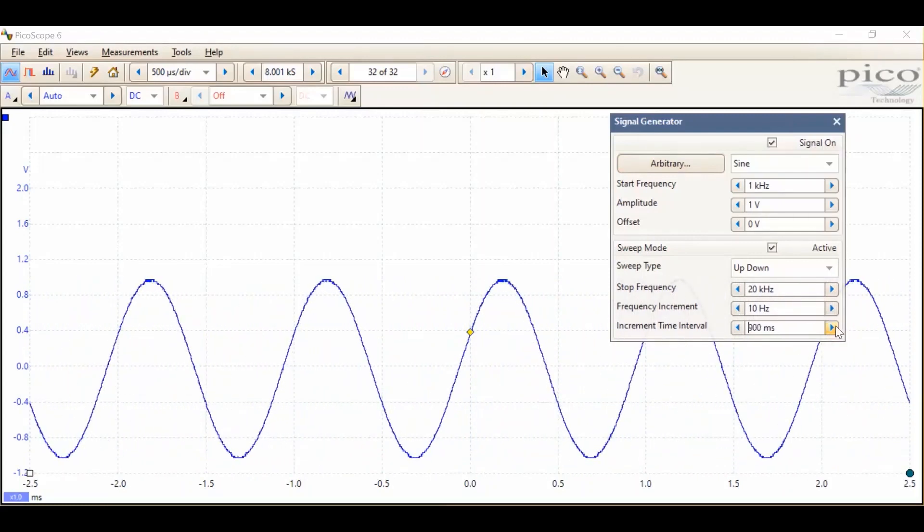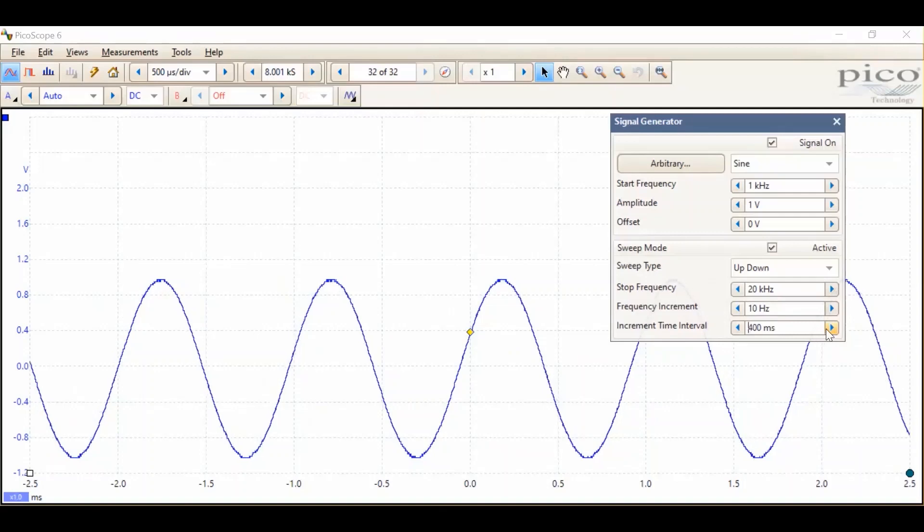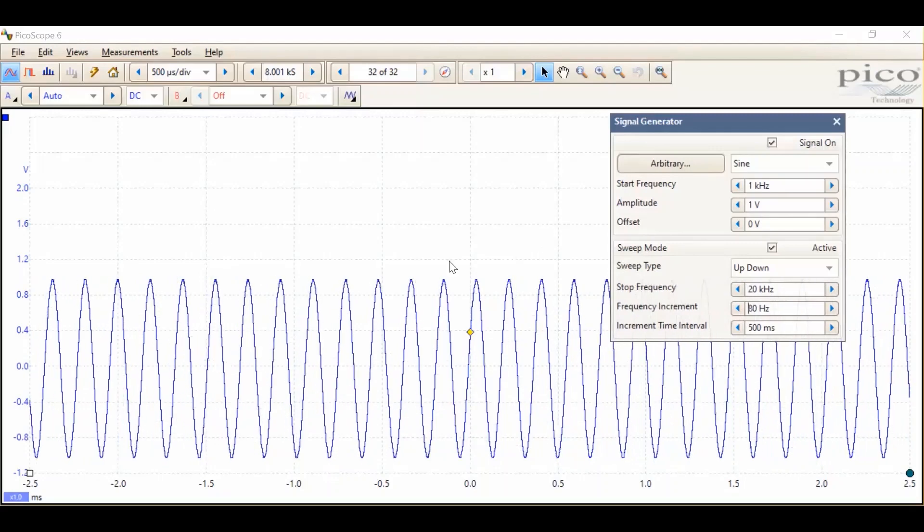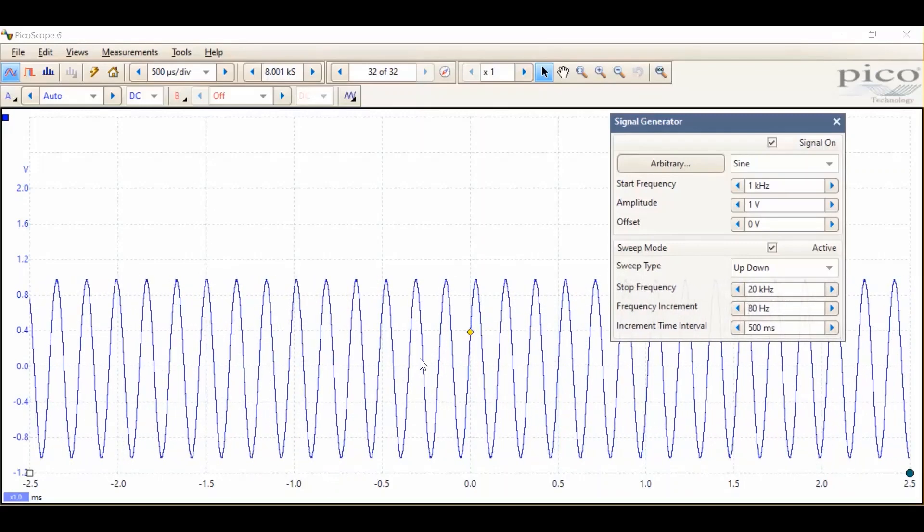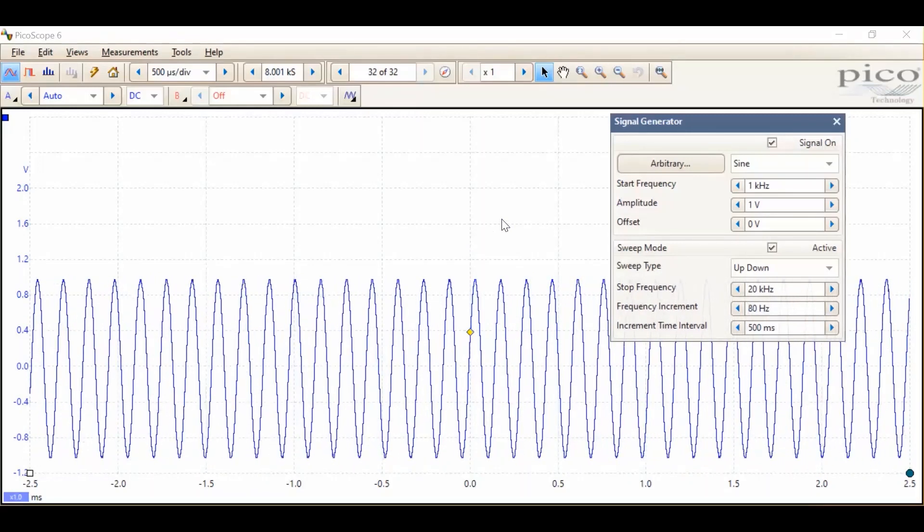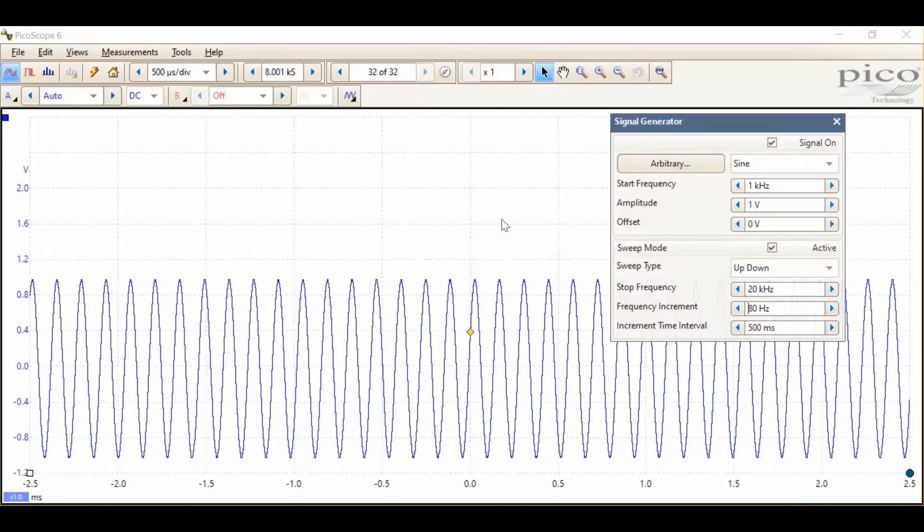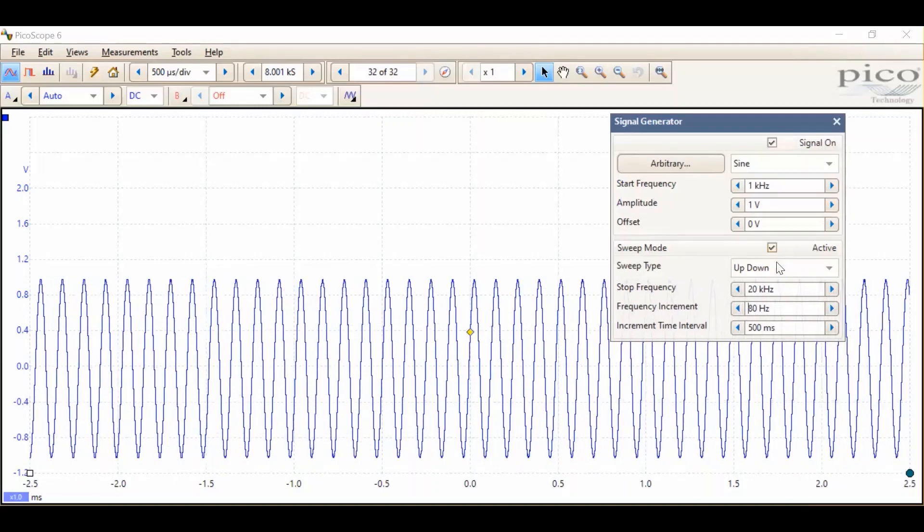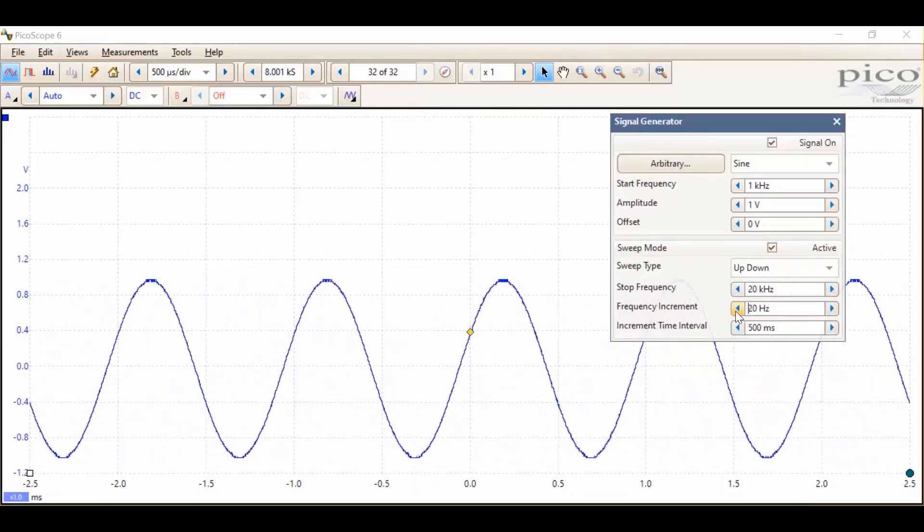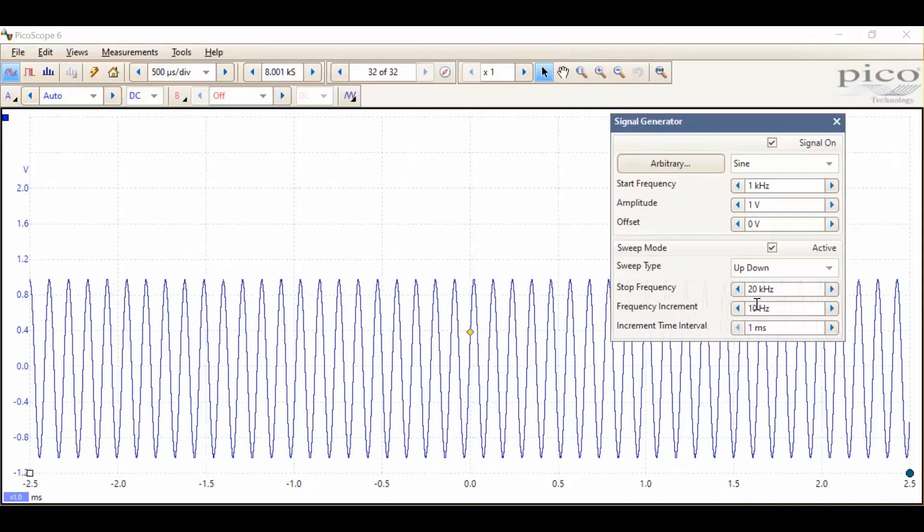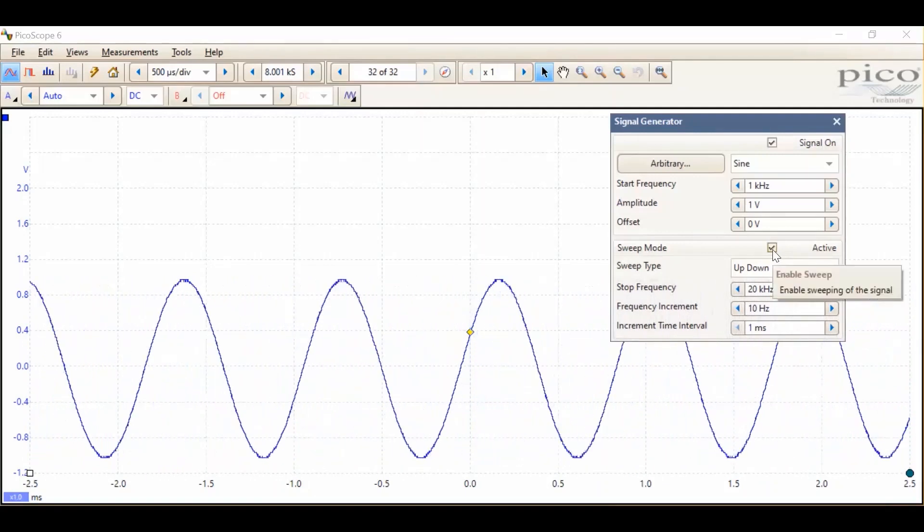If we increase the time interval to about half a second between each step and increase the frequency increment we can see those steps quite clearly. Sweep generators are often used to characterize the frequency response of circuits such as filters or amplifiers and being able to control the time and resolution of the sweep may be helpful. Okay, let's return those to the default setting and close the sweep generator.